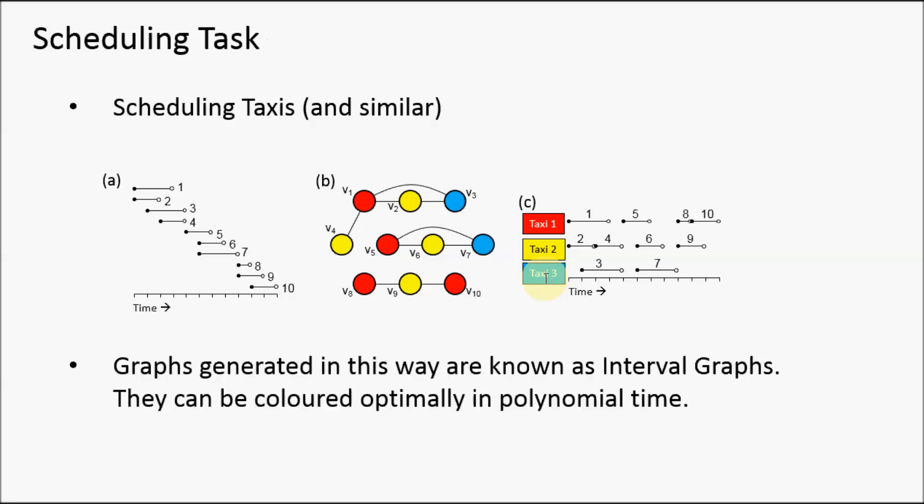In fact, this type of graph is known as an interval graph, a special type of topology. It's known that these can always be solved optimally.